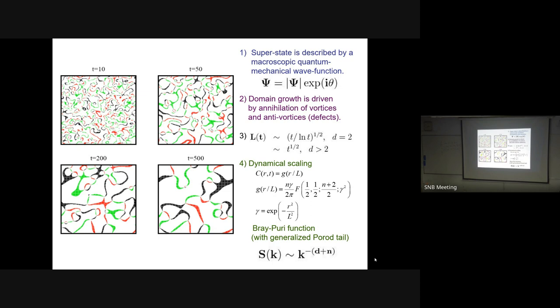A vortex versus anti-vortex is a matter of convention: if going clockwise you pick up +2π it's a vortex; if you pick up -2π it's an anti-vortex. The three colors shown are three widely separated phase-angle windows. If I indicated all phase angles by color, the entire picture would be covered in color. The junction points of different colored regions are the vortex cores.